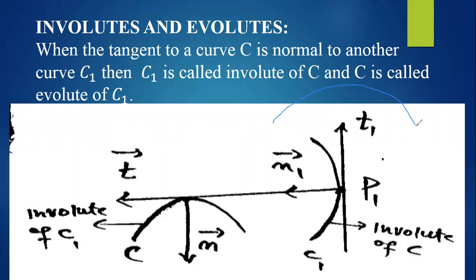If there exists another curve C2, and when we extend the tangent vector of C1 to reach C2, that tangent vector which is tangent to C1 becomes normal to C2. So C1 becomes the evolute and C2 becomes the involute.